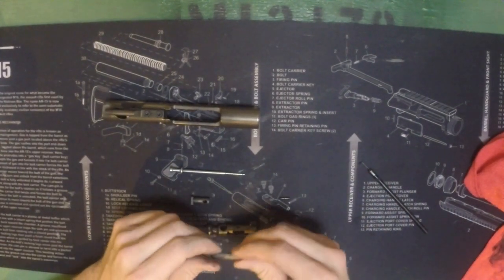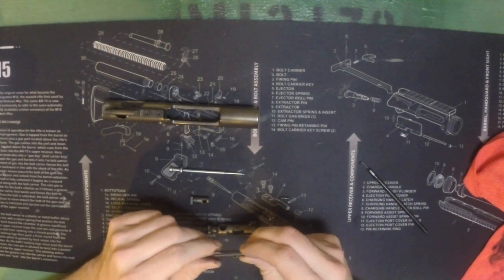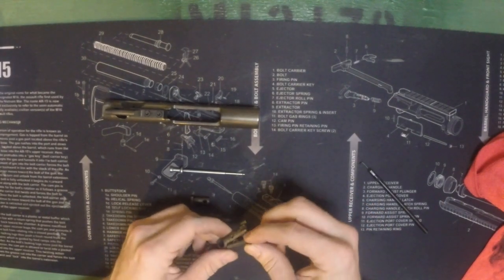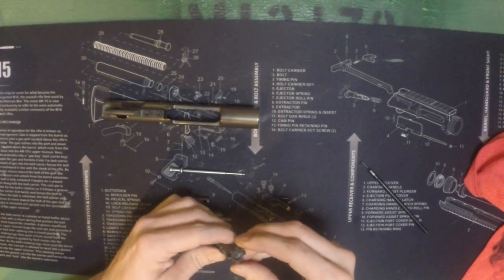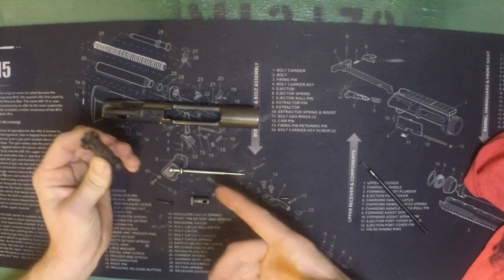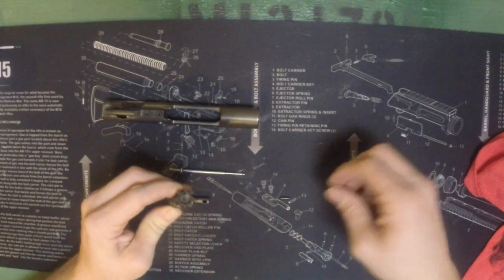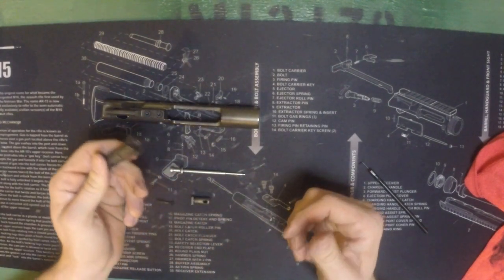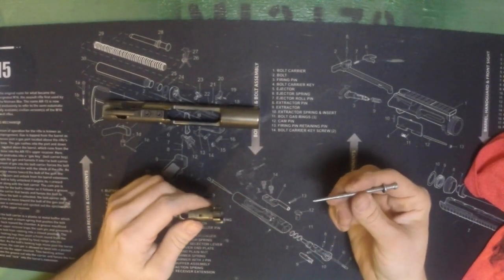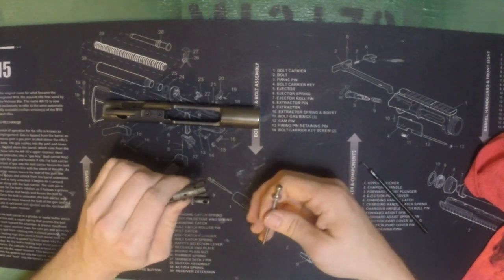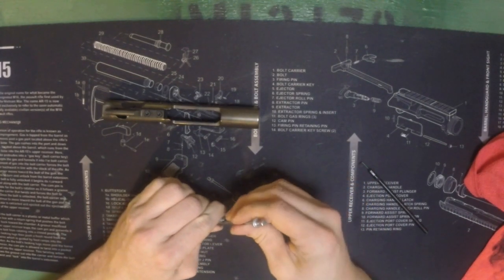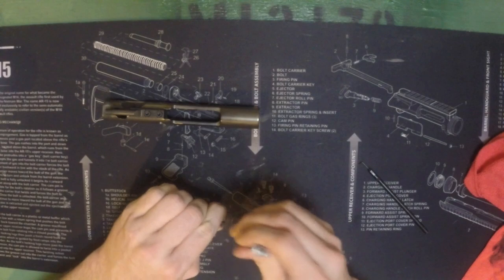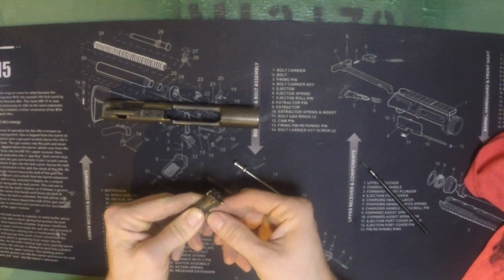Another simple step you can do to improve the reliability of your AR-15, AR-10, whatever you're using, is to take this extractor off. So this extractor goes right on the side of the bolt itself, and once you take the bolt out, there's this little extractor pin.